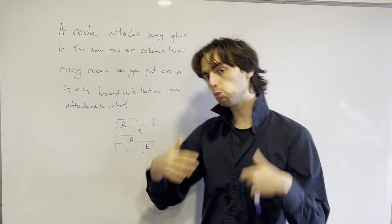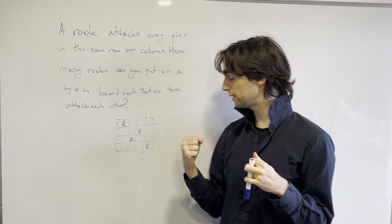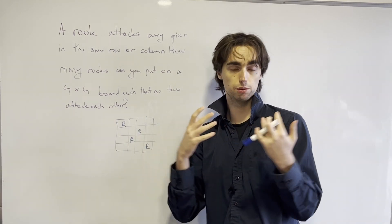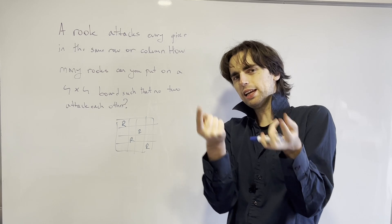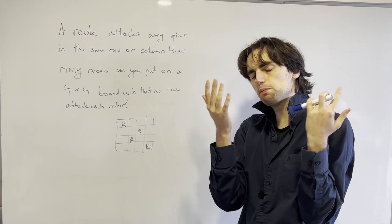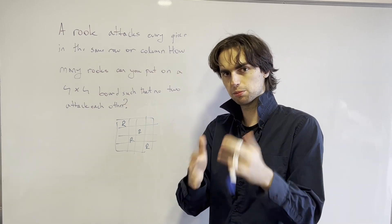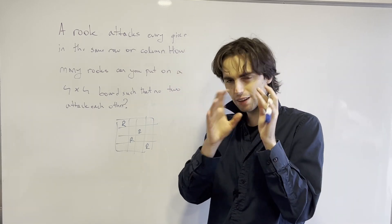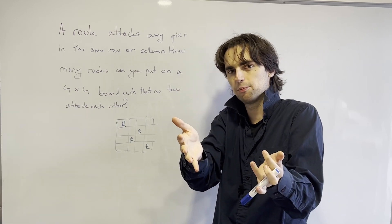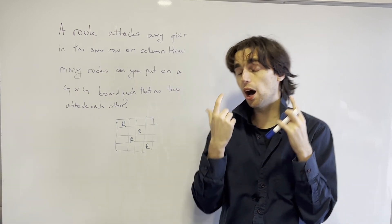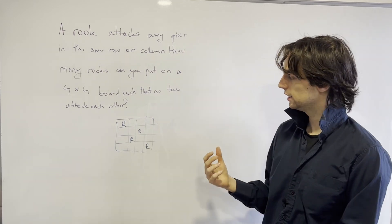That's only one part of the problem. The other part is proving that you can't put five. I'd let you think about how you could prove that you cannot put five rooks on the board — take five minutes and just think about how you would do that.